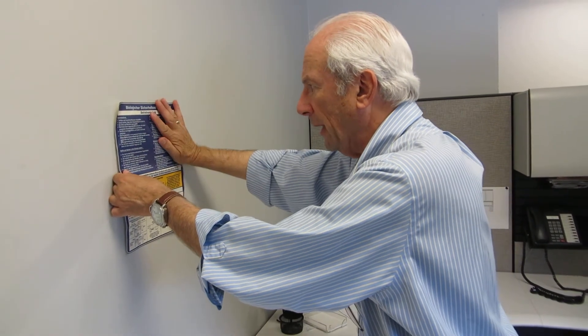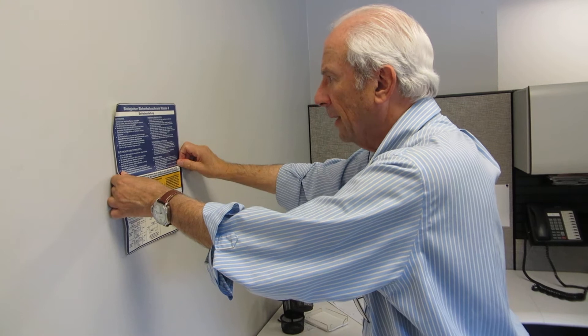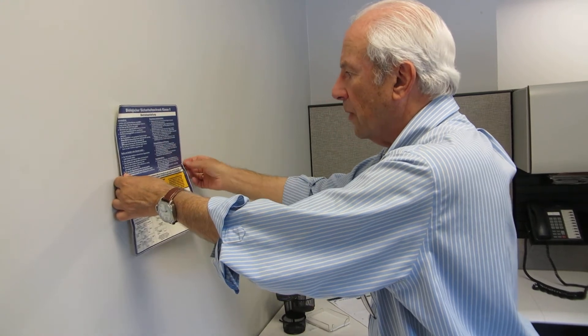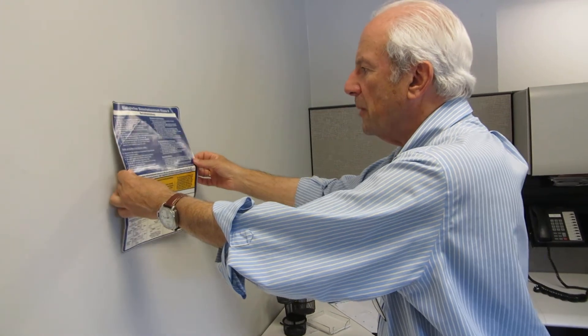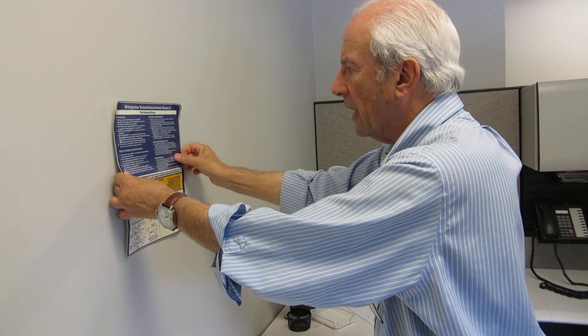A high tack label will stick quickly and stay down quickly. A low tack is removable and repositionable should you make a mistake in its application.